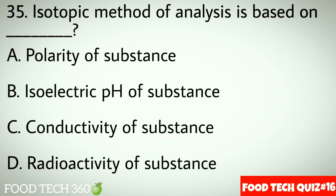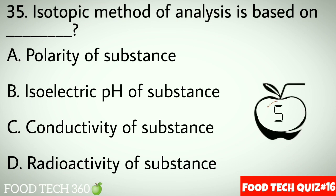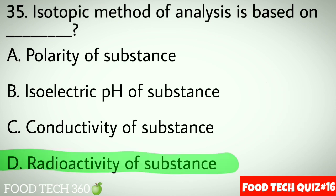Question No.35: Isotopic method of analysis is based on dash. Options A: Polarity of substance. B: Isoelectric pH of substance. C: Conductivity of substance. D: Radioactivity of substance. Correct answer D: Radioactivity of substance.